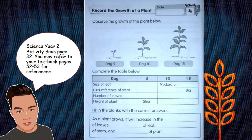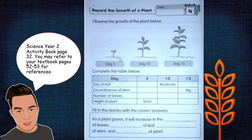For your final activity for this lesson, get ready with your Science Activity Book and turn to page 32. In this activity you will have to record the growth of a plant from day one until day 15. You are given three pictures — day five, day ten, and day fifteen — and you fill in the table with the size of the leaf. For day ten it is 'moderate' which means 'sederhana.' Day five is small, and after day fifteen it becomes large.